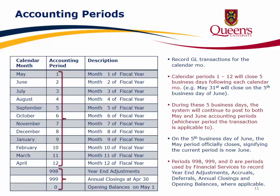During these five business days, the system will continue to post to both May and June accounting periods, whichever period the transaction is applicable to. On the fifth business day of June, the May period officially closes, signifying the current period is now June. Periods 998, 999, and 0 are periods used by Financial Services to record year-end adjustments, accruals, deferrals, annual closings, and opening balances where applicable.